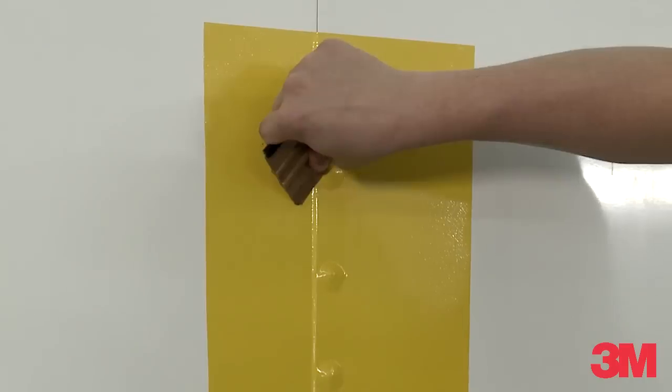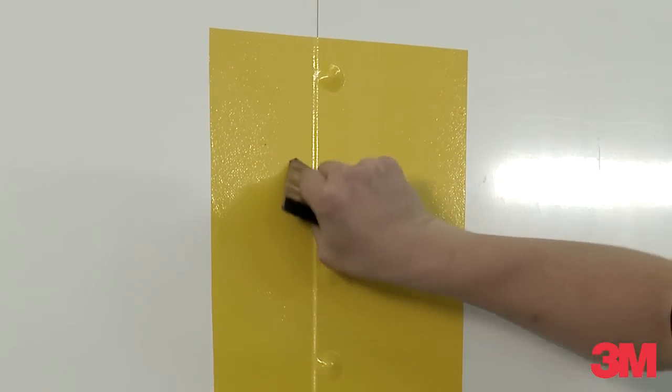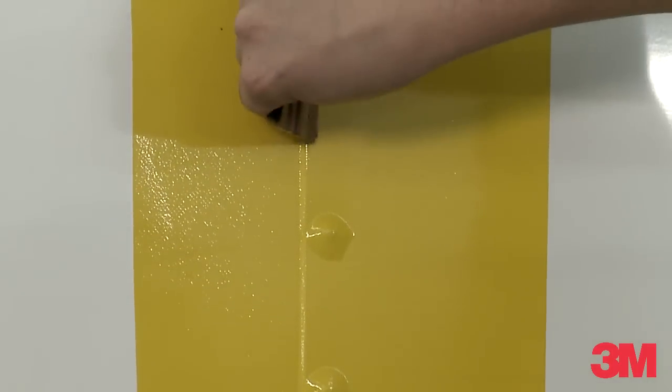Then we come back again with the squeegee before we add any heat and squeegee all that trapped air as tight around the rivet as possible.